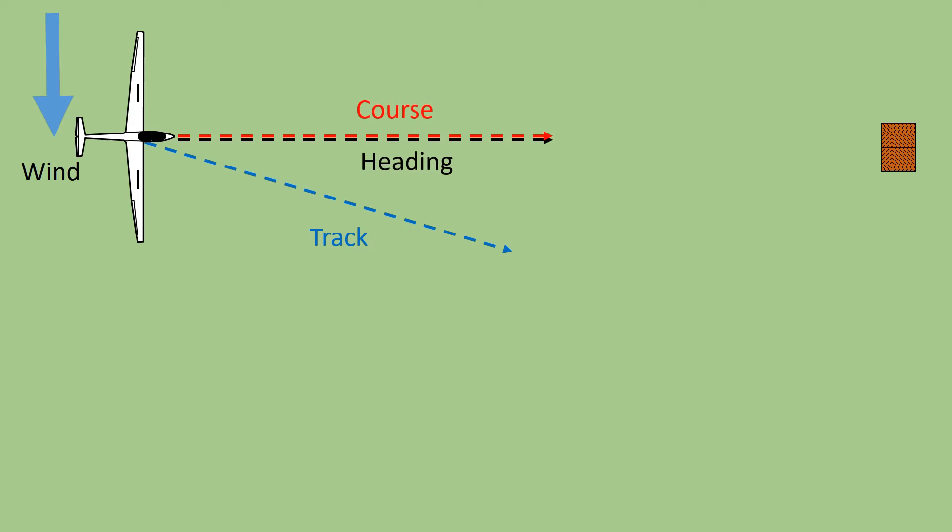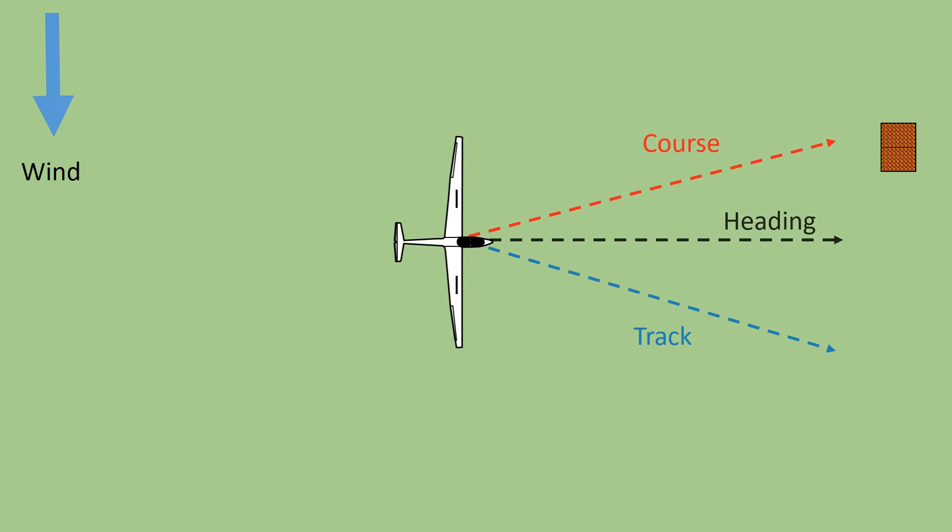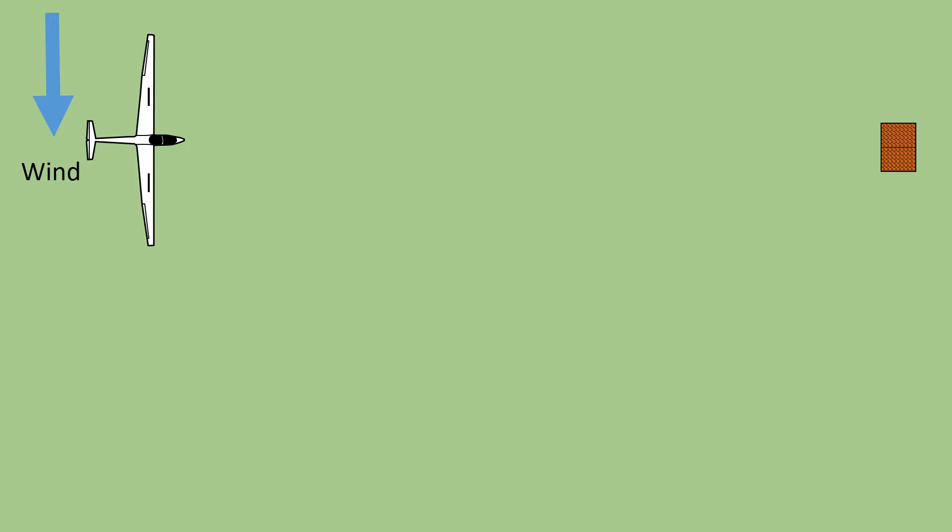When there is a crosswind, setting the heading to equal the course results in a track that goes downwind. After a while it becomes clear that our heading is no longer the same as our course and we are not going to end up in our desired location. We could continually modify our heading so that it is always pointing where we want to go. This results in a curved track like this.